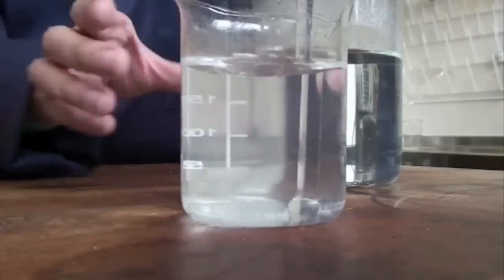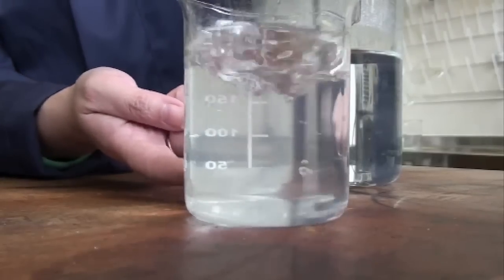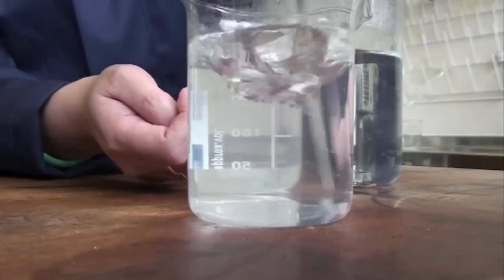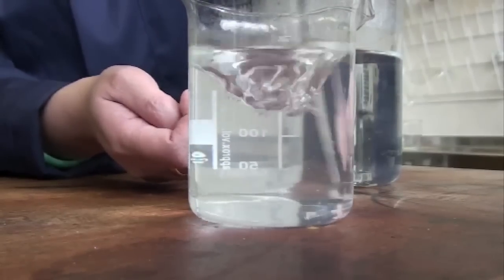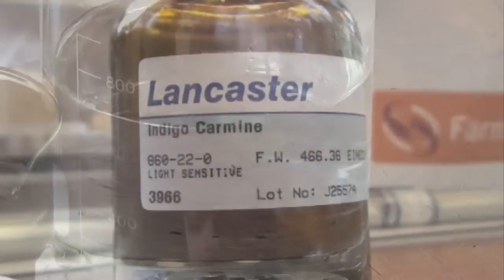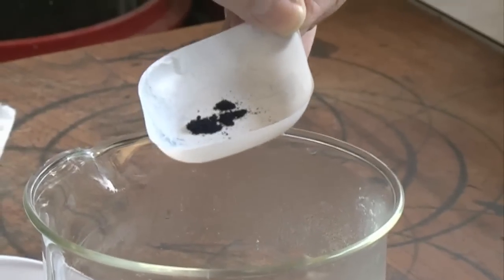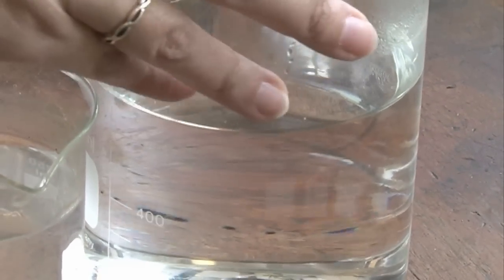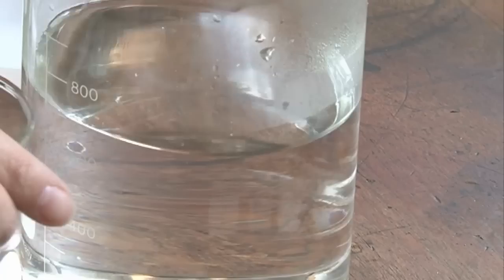We've got our sodium hydroxide, we've got our glucose solution. Both solutions are colorless, they're clear, quite dull. With the addition of this dye we'll be able to see a color change reaction. If you look at it in this container it's really dark, it almost looks black, but once we add it to this you'll actually see what color it is. In it goes.